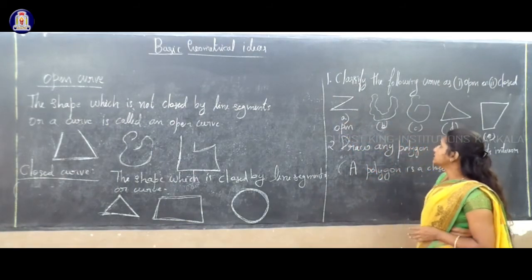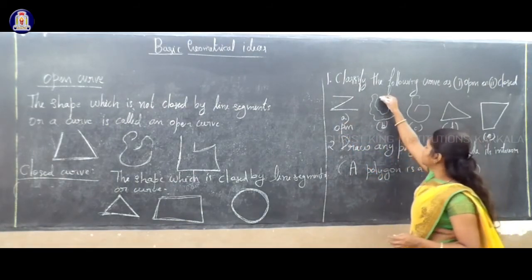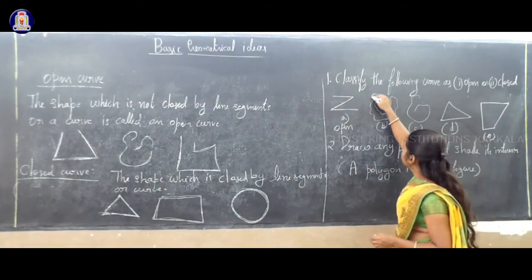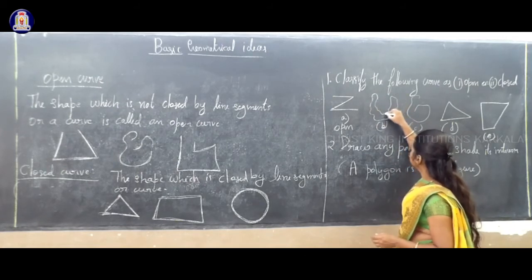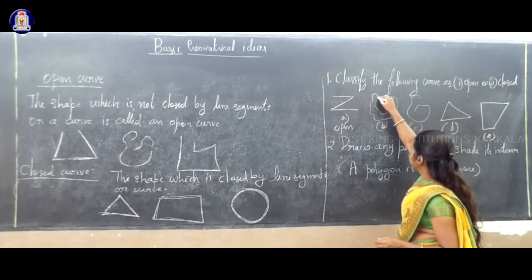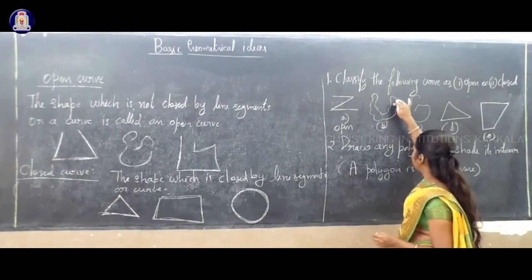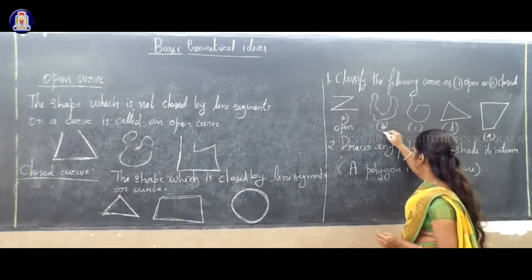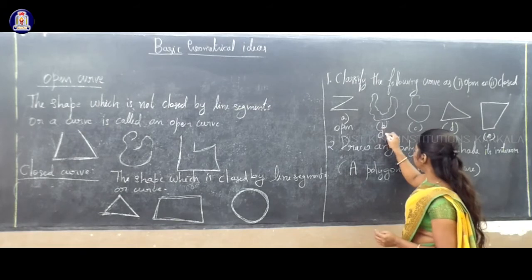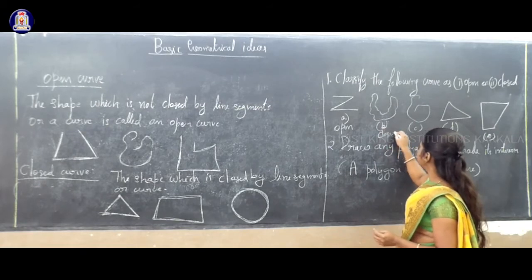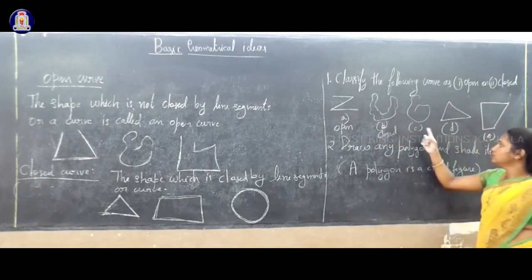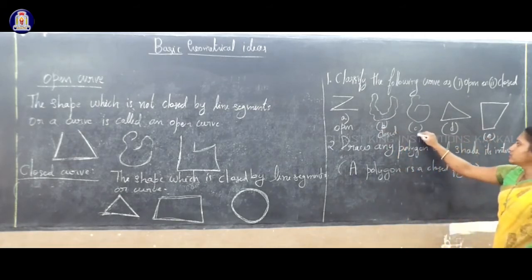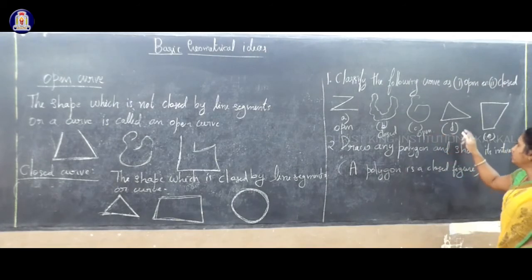Is the first figure a closed or open curve? This is an open curve — it is not closed. Now second one: the curve is given and there is no opening in this curve, so this is a closed curve. The third one is open curve. And D is a closed figure.